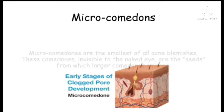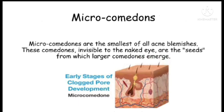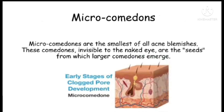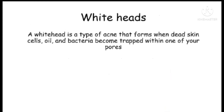Micro comedones are the smallest of all acne blemishes. These comedones are mostly invisible to the naked eye. They are like seeds from which larger comedones can emerge. As you can see in the picture, there are some micro comedones that may pop up later.